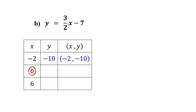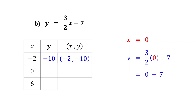Next, the value of x is given as zero. Substituting zero for x, you find that y equals negative seven. So the ordered pair (0, -7) is another solution to the equation.